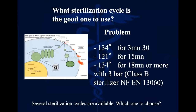Starting with the sterilizer — what kind of cycle are you going to use? There are several kinds of cycles, but the best is to use 134 degrees for 18 minutes or more, with 3 bar pressure. We use a Class B sterilizer for that, which most dental and medical clinics have, and this is what we call prion sterilization. If you want to use a short sterilization cycle like 121 degrees for 15 minutes, you need to use the instruments immediately after, or they will not keep the quality of prion sterilization. So we choose by default, all the time, the prion sterilization.